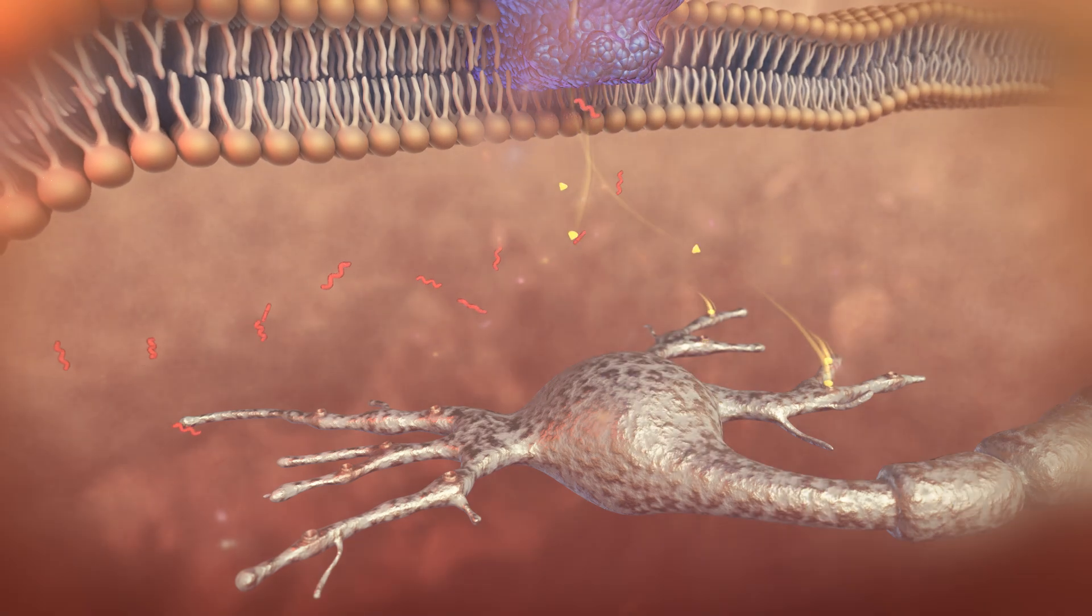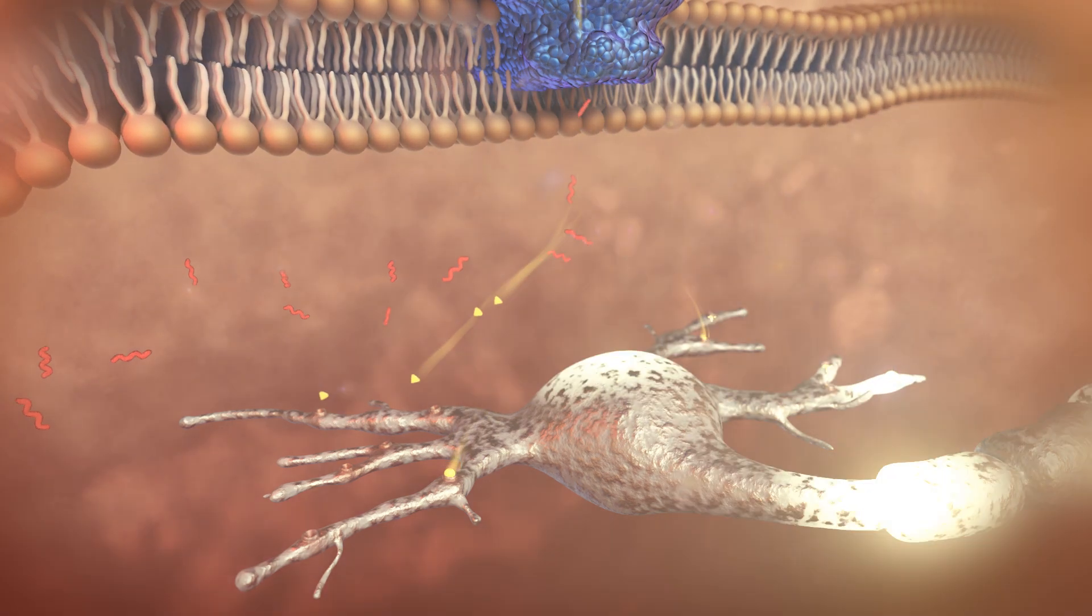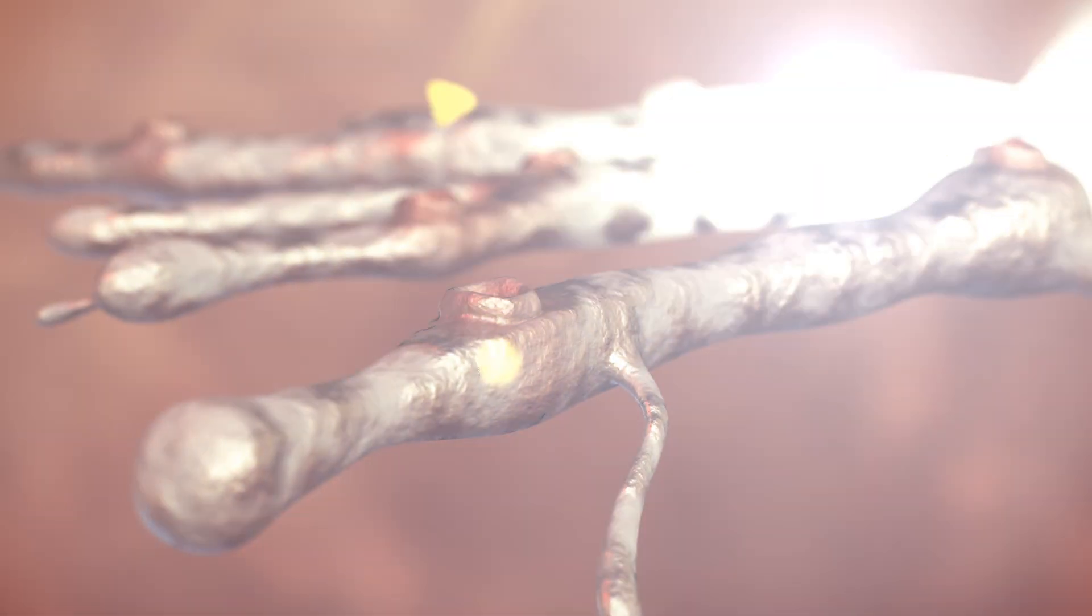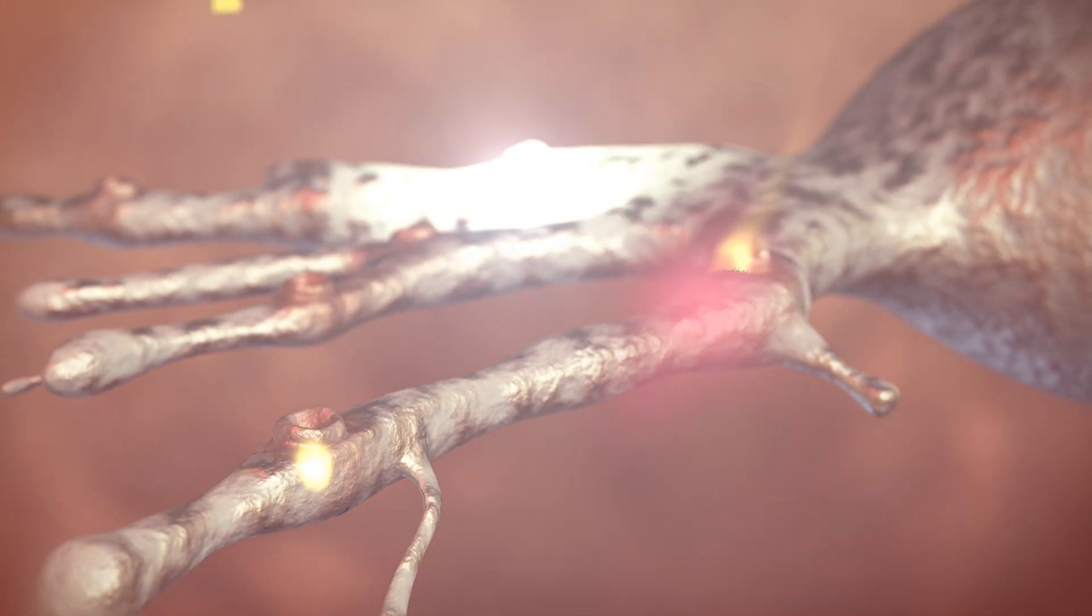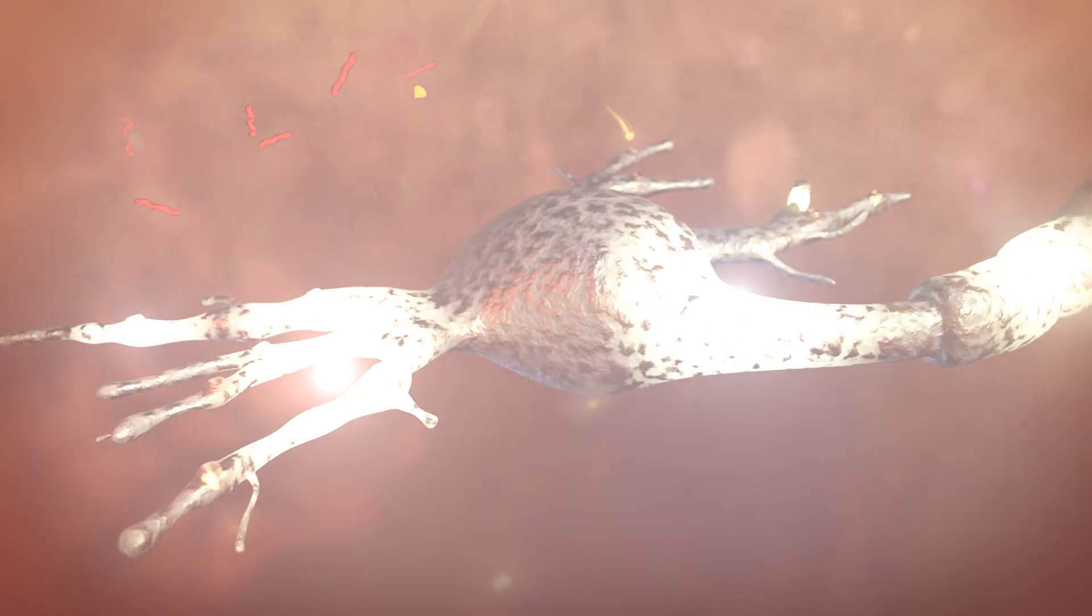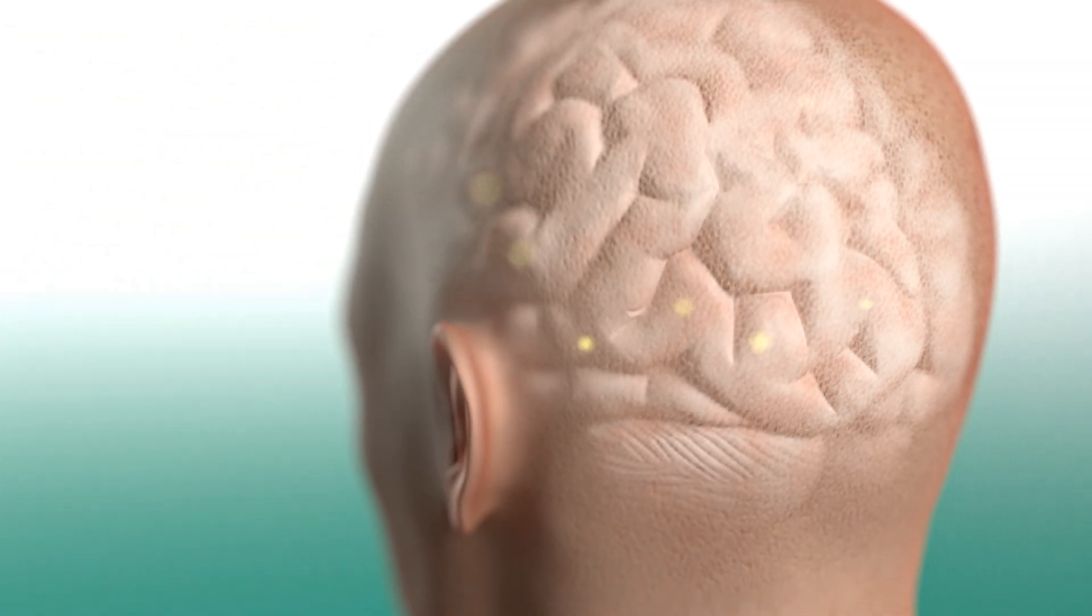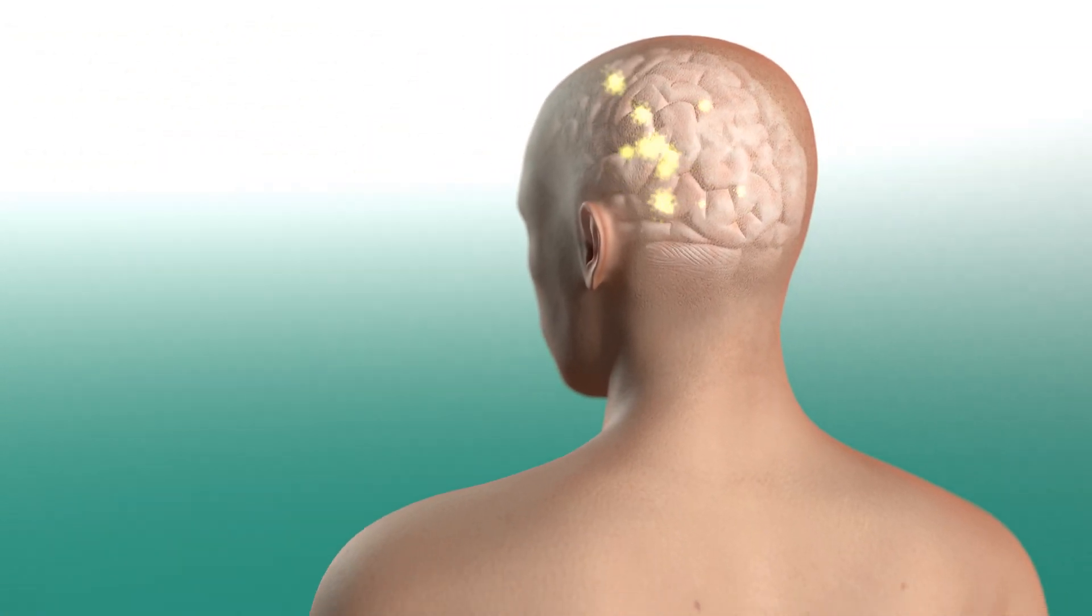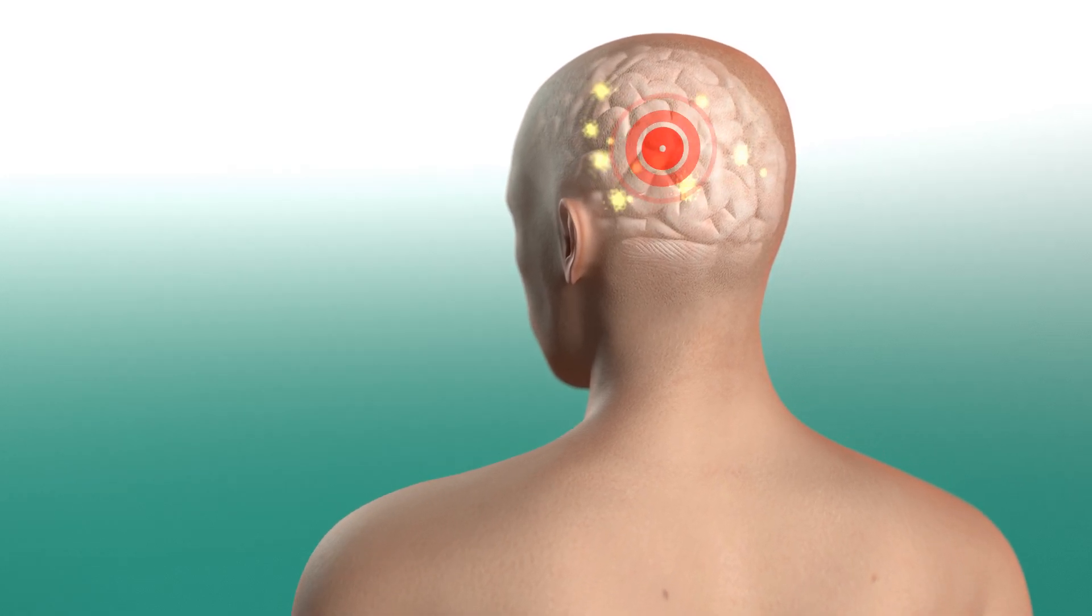These messenger substances are an exact fit for pain receptors on the nerve endings. There they dock, and the stimulation thus caused is sent on as an electrical signal to the brain via the nerve fibers.